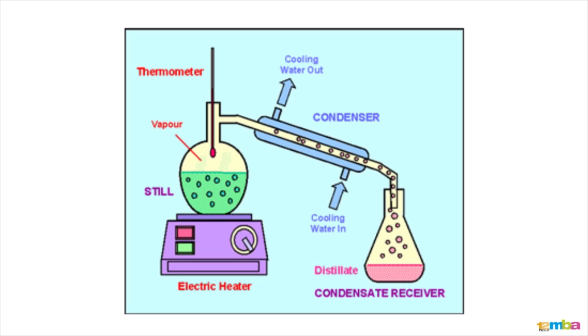By the simple process of heating and cooling, you achieve the separation of different components of hydrocarbons. On an industrial scale, this is done through a distillation column.